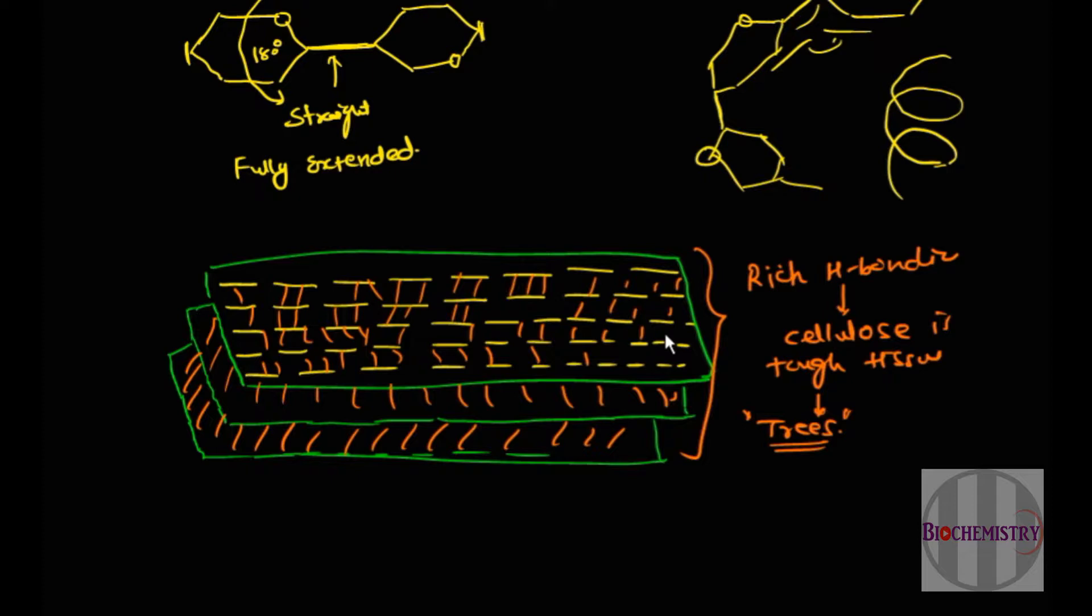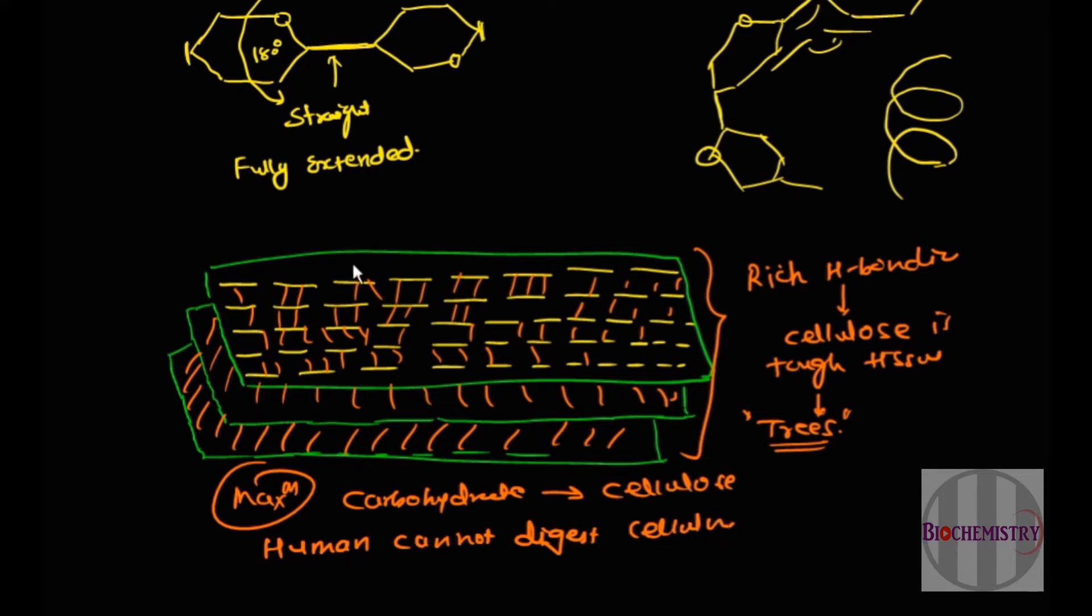Cellulose is one of the toughest tissues. On earth, the maximum carbohydrate is in the form of cellulose, but humans cannot digest cellulose. The reason is our intestinal enzyme can only break alpha 1-4 glycosidic bonds, but not these beta 1-4 glycosidic bonds.